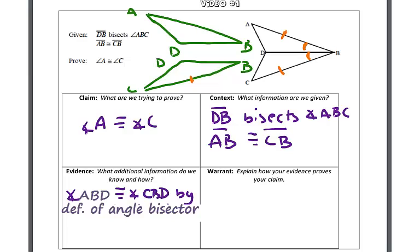If I mark the information we already know—CB is congruent to AB, angle ABD is congruent to angle CBD—what we see is that we have a shared side. DB is the same in each triangle.